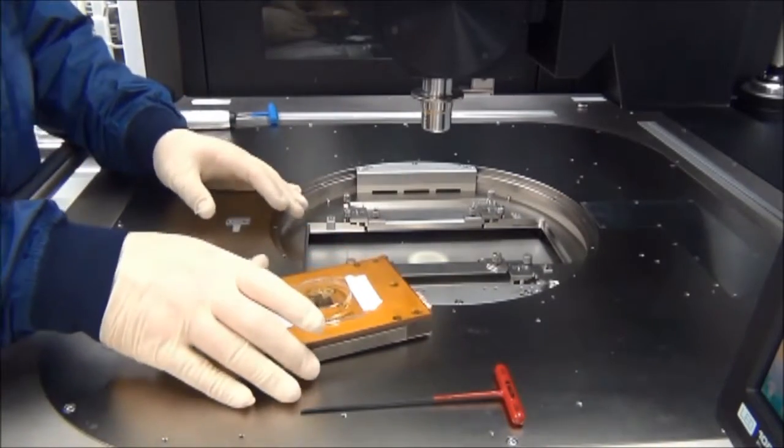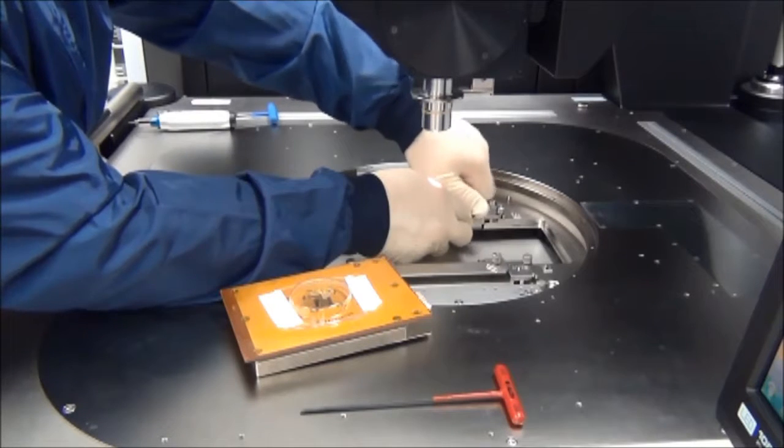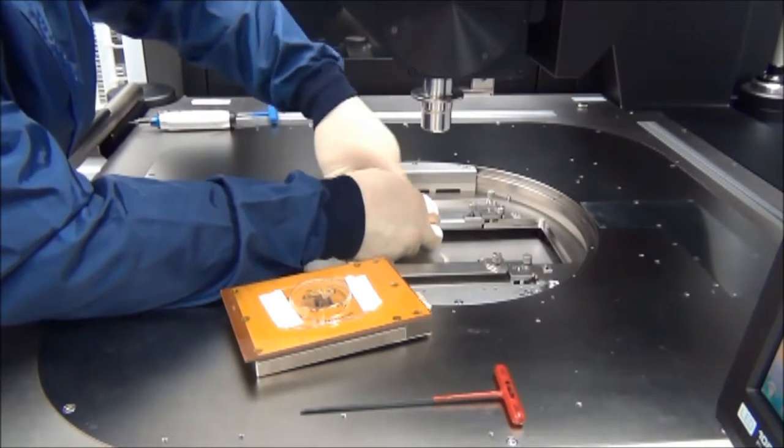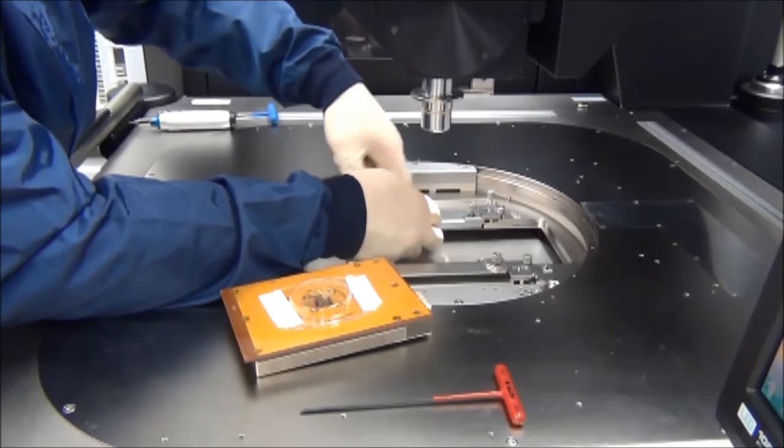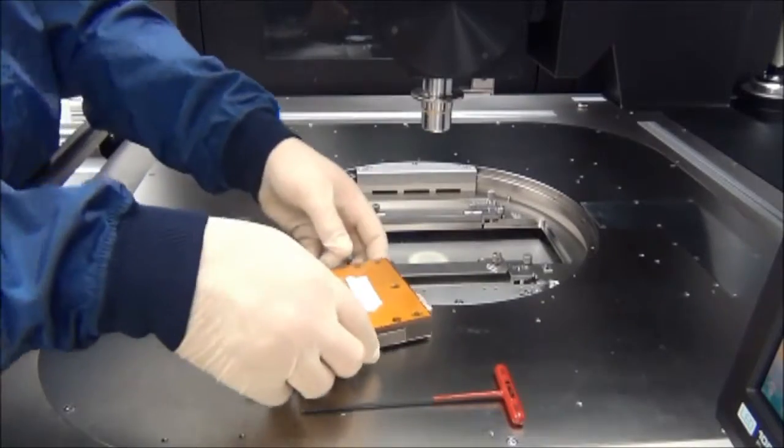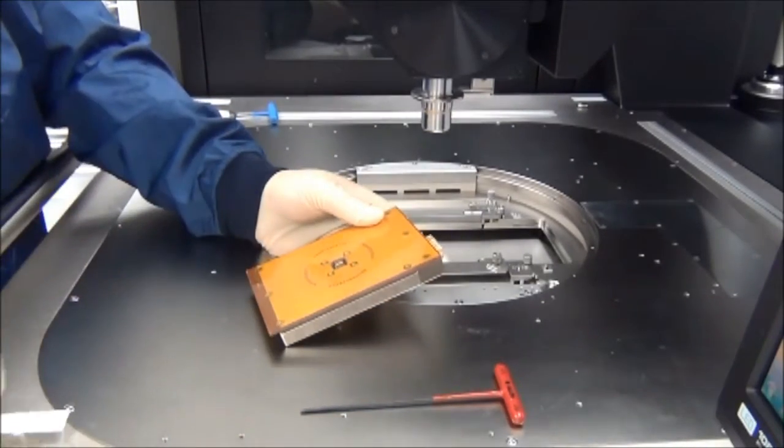We are now ready to install our probe card of choice. To begin, I loosen the thumb screws for the inner rail clamping assembly and ensure the clamps are retracted to allow the probe card to seat properly on the reference surface. I then remove the tip protector from the probe card and inspect the underside of the probe card for damage or debris.